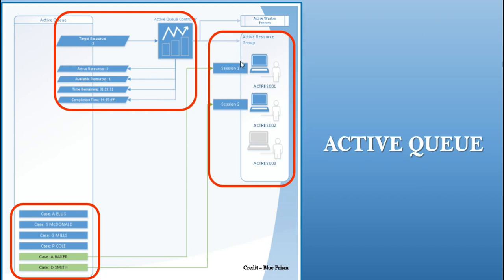Based on these three resources in our Active Queue controller, here we can see Active resources: 2, target resources: 2. It means there are two resources that are active to process the queue items. Now one available resource we have — this is the one available resource on which we are not running currently. We have only two resources on the target which are the active ones where we are going to run the queue items. From the Active Queue controls, we can see the time remaining and the completion time.